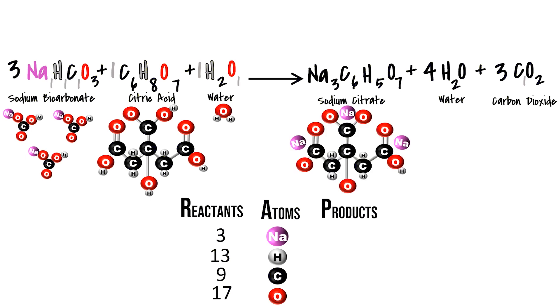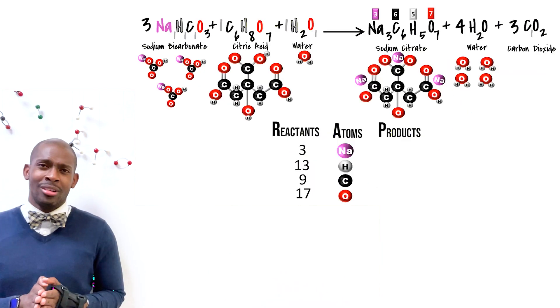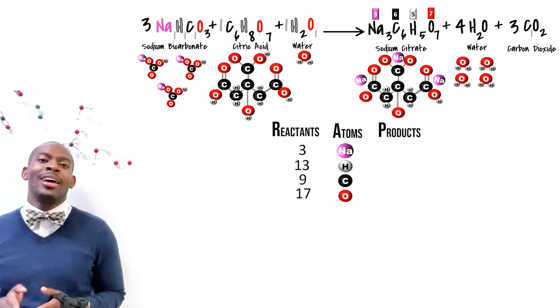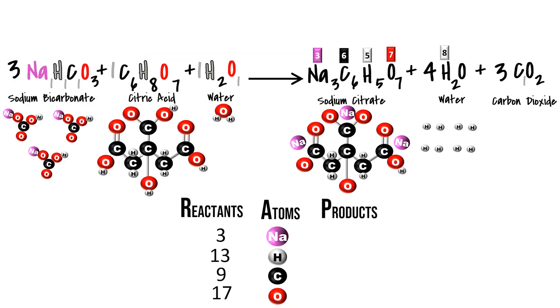In our products, we have six carbon atoms, five hydrogens, seven oxygen atoms, and three sodium. In those four water molecules, there are how many hydrogens? Eight hydrogens and we have four oxygen atoms.